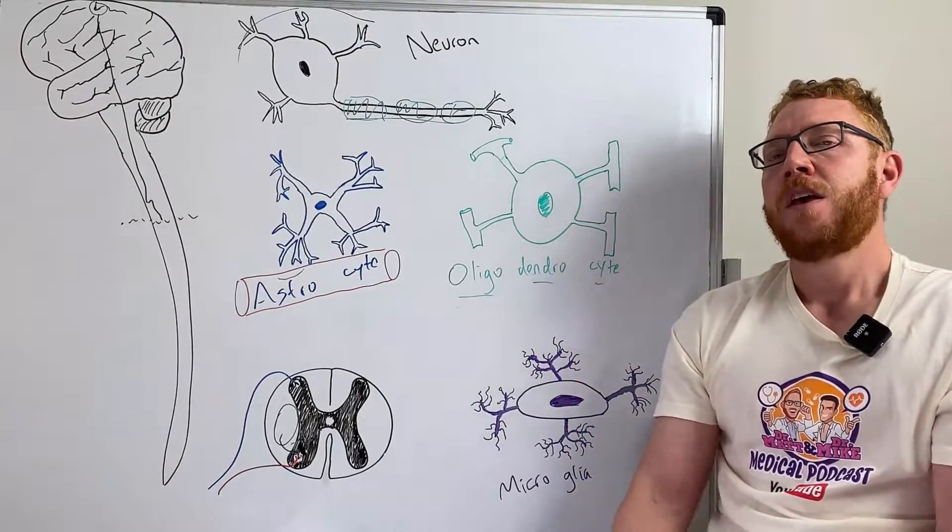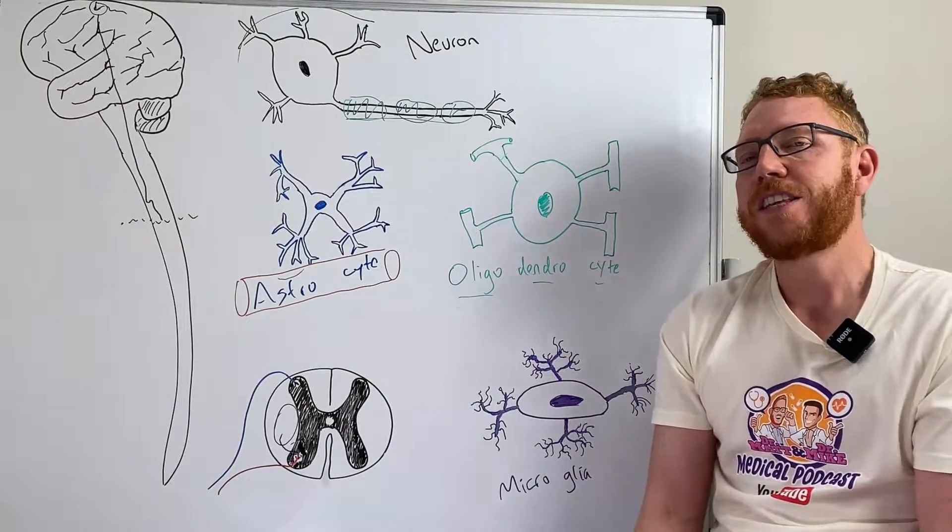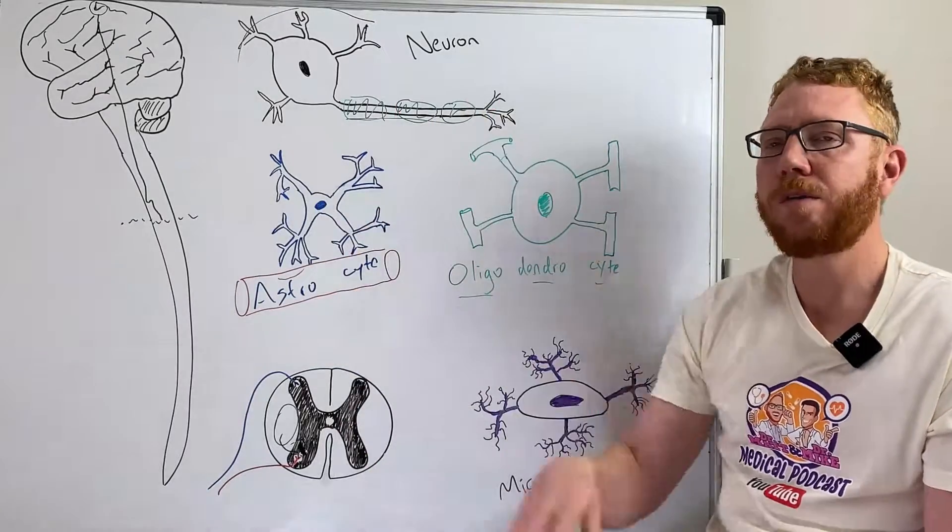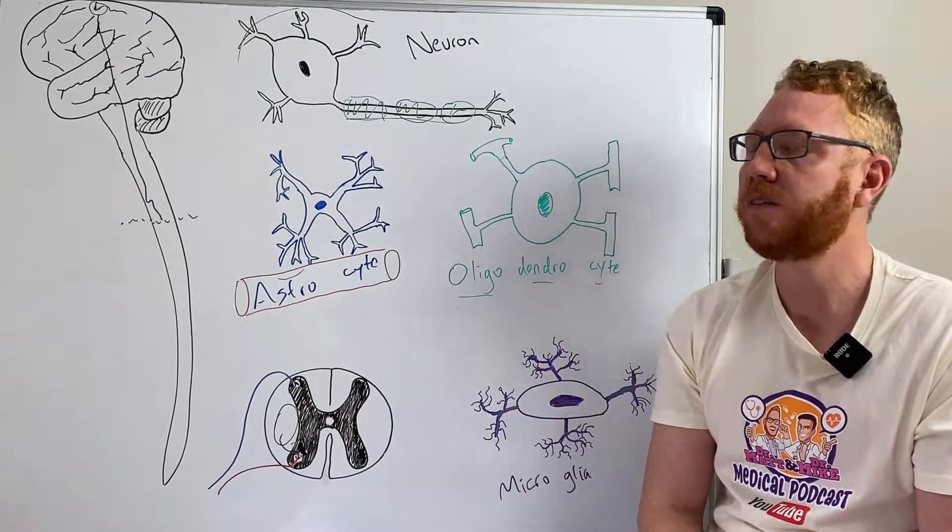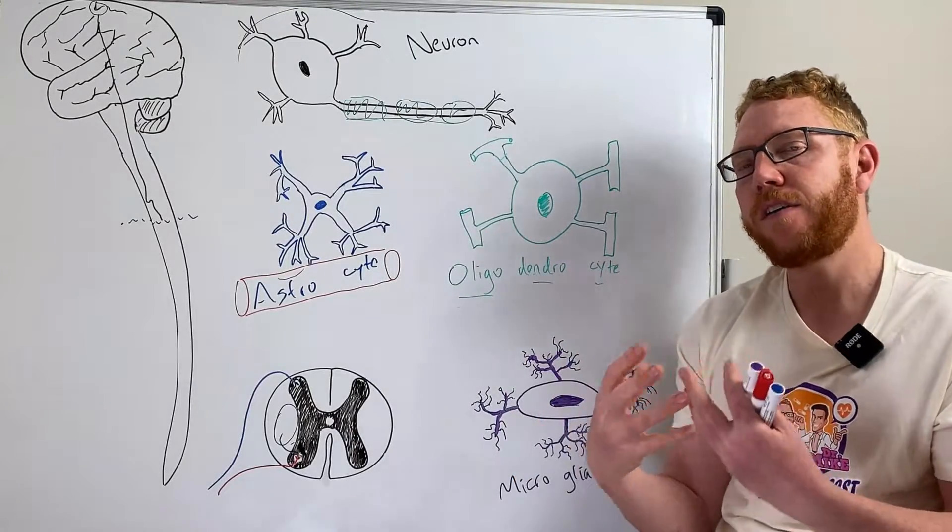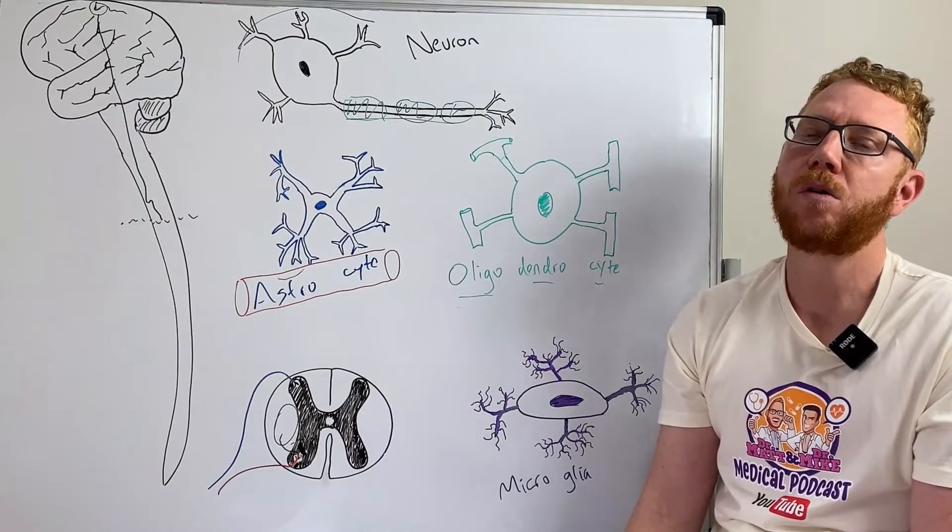So there we have it, that's the main cells that we need to know of the spinal cord. We have the neuron, highly important for the electrical information, and then there's these three glial cells that are very important to help the role of the spinal cord. Thank you.